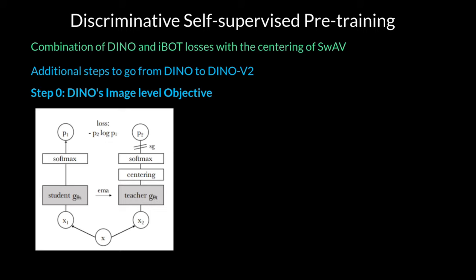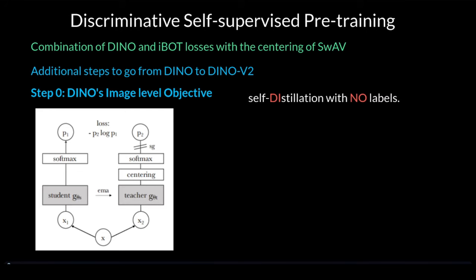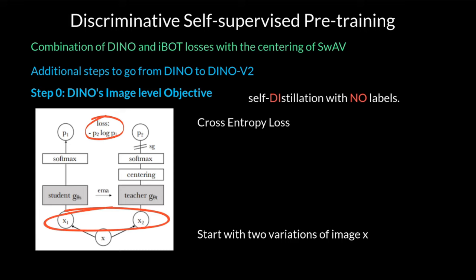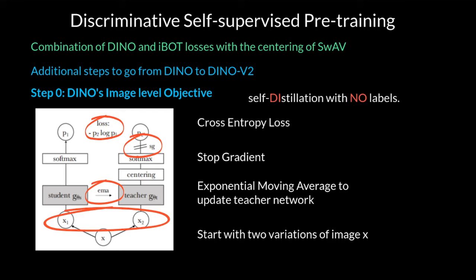Beyond the data pipeline, DINOv2 is a series of improvements to DINOv1. DINO stands for self-distillation with no labels. We start training with two variations, X1 and X2, of the same image X, and pass them through separate student and teacher networks with the same architecture but trained differently. We train the student network with a cross-entropy loss; however, a stop gradient prevents the teacher from being trained with the same loss — instead, the teacher network is updated with the exponential moving average from the student network. We can call this training an image-level objective because we use the entire image for training.